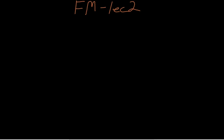Welcome to Fluid Mechanics lecture number 2. In this lecture, the first thing we're going to talk about is density. The Greek letter for density is rho. Rho is equal to — so the density is equal to — mass over volume.